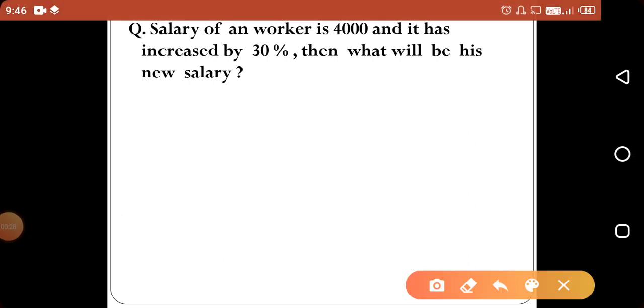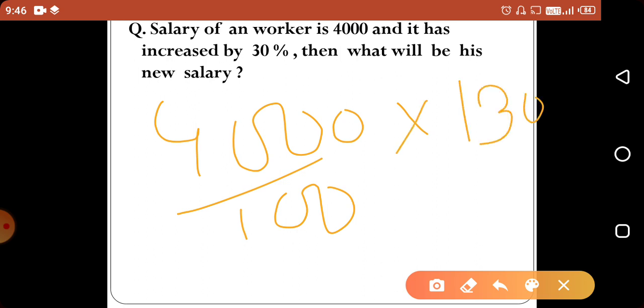First question: The salary of a worker is 4000 and it has increased by 30%. Then what will be his new salary? The formula is the original value multiplied by 130 divided by 100. So the calculation is 4000 into 130 divided by 100.